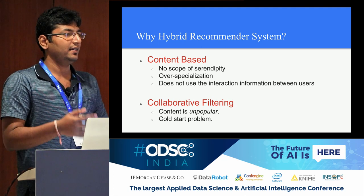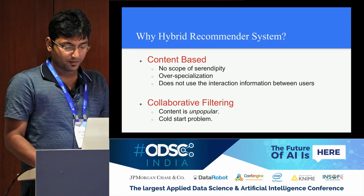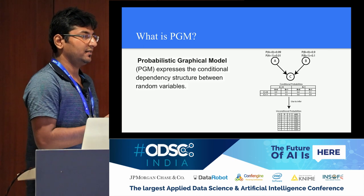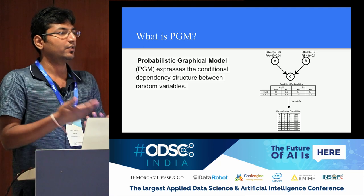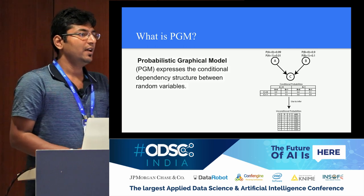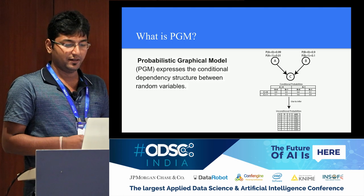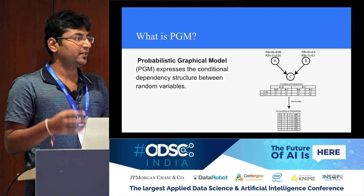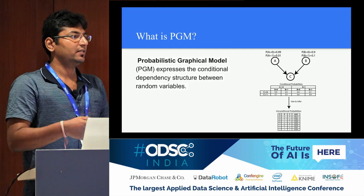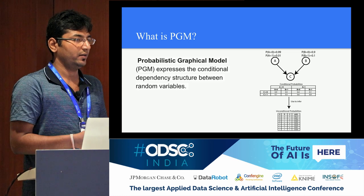In hybrid recommendation, we basically combine all the positive things of those two approaches. Using a probabilistic graphical model, we are going to build a hybrid recommendation system that uses the essence of both content-based and collaborative filtering. A PGM — probabilistic graphical model — is basically a directed acyclic graph where individual nodes are dependent only on their parents. Based on that, we calculate the transition probability from a particular node to its child node.